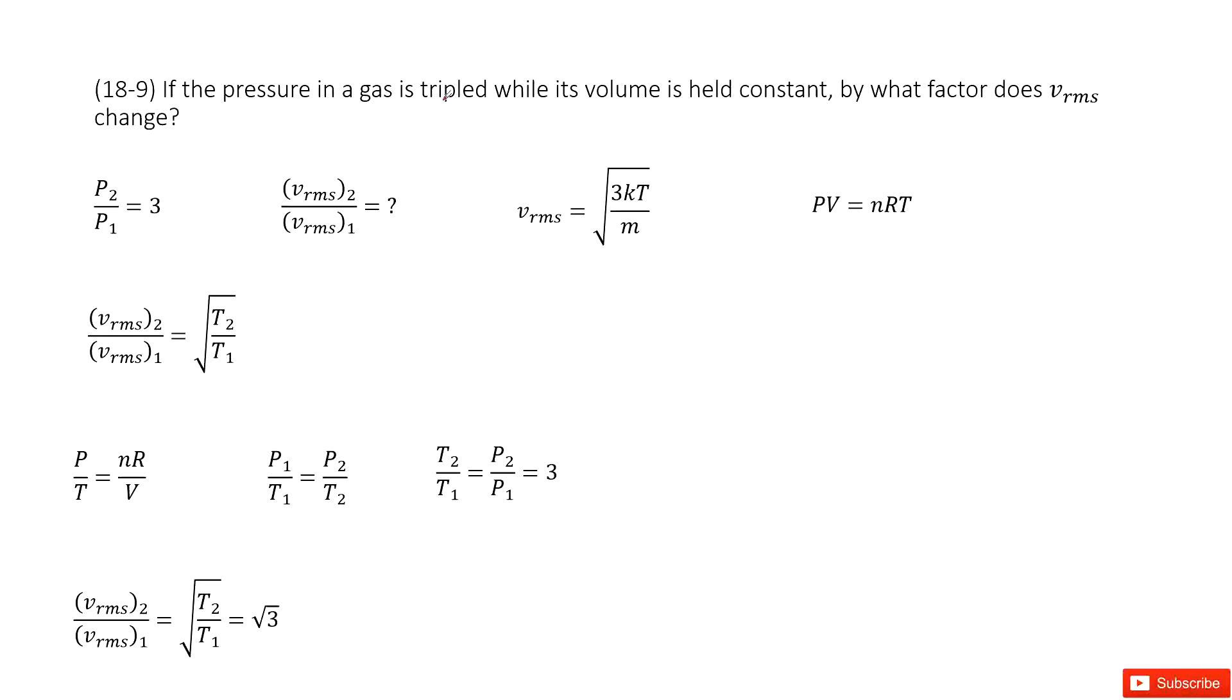Here we can see we have a gas and we know its pressure ratio for final state to initial state is 3. So P2 over P1 is 3, and the volume is constant.